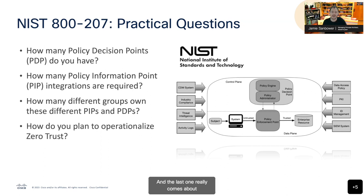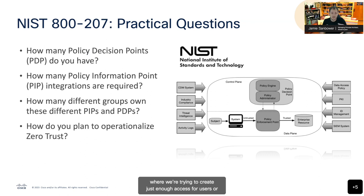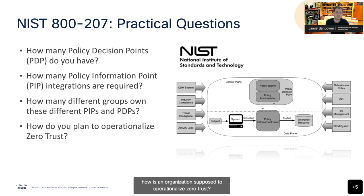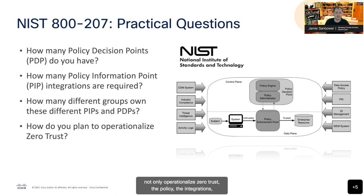In the world of least privilege, where we're trying to create just enough access for users, devices, or applications, how is an organization supposed to operationalize Zero Trust? Not only operationalize Zero Trust — the policy and the integrations — but how do you do that without adding 50 or 100 additional staff members to take on that additional work?